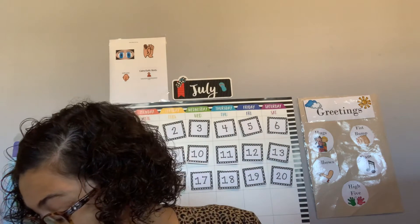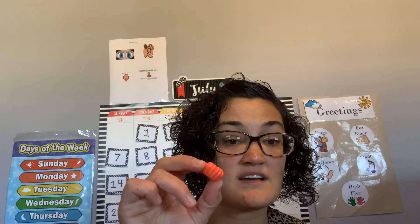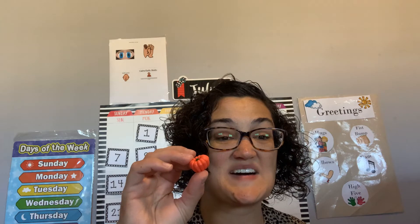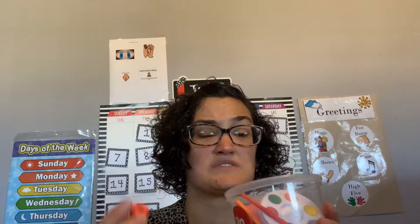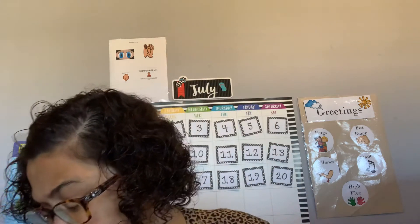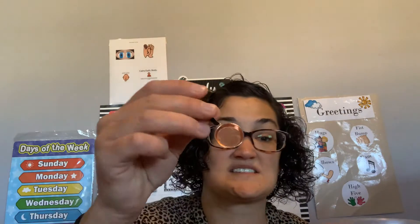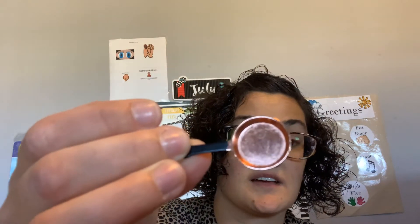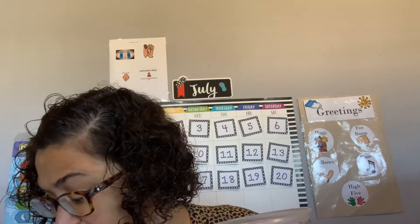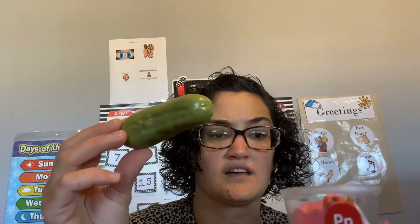We have a few more things for the P bucket. What is this called? Pumpkin! Pumpkin goes in the P bucket. This is small, so I'll bring it close to you — what is this called? A pan. Pan makes the P sound, so it goes in the P bucket. And then last but not least, I have this. What is this called? Pickle! Pickle goes in the P bucket.